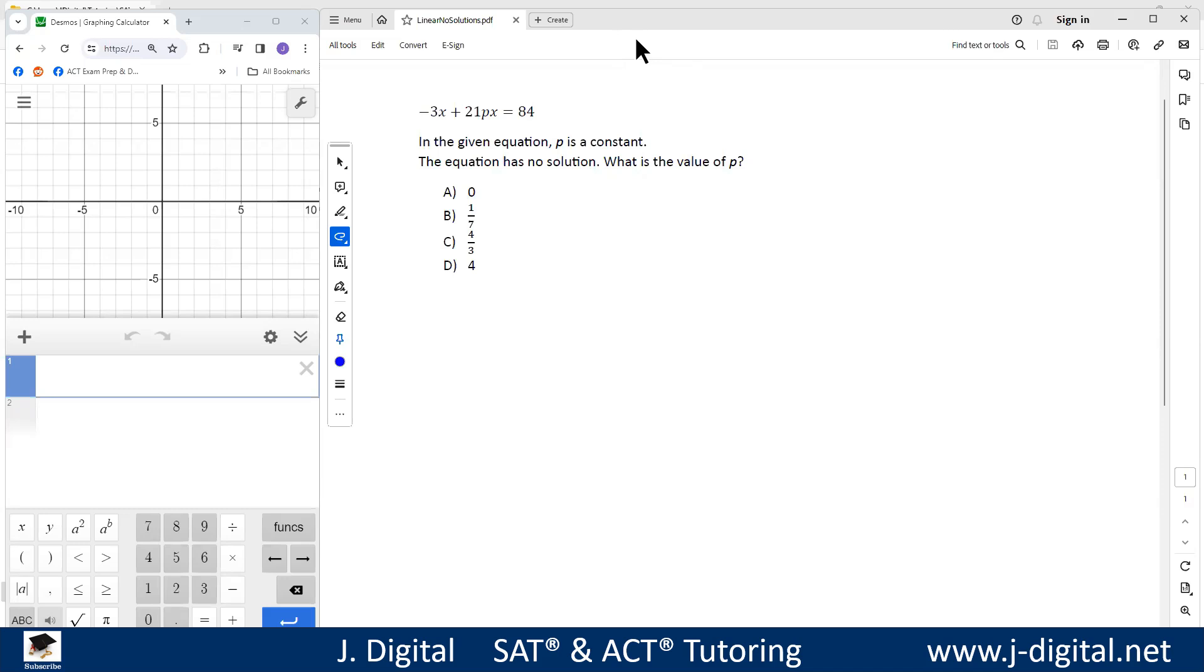All right, so here is an SAT problem I'm going to take a look at. This has -3x + 21px = 84, and the given equation p is a constant. The equation has no solution, what is the value of p?